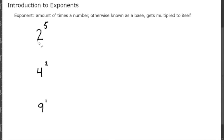Our base is 2, so we're going to be multiplying that 2 to itself 5 times. 2 times 2 is 4, 4 times 2 is 8, 8 times 2 is 16, 16 times 2 is 32. So 2 to the fifth is 32.